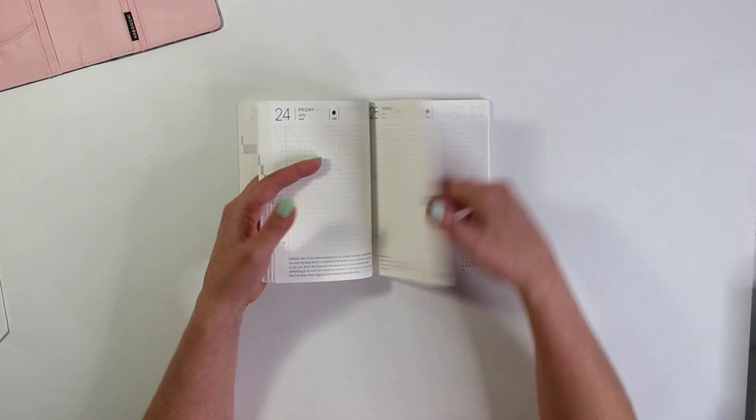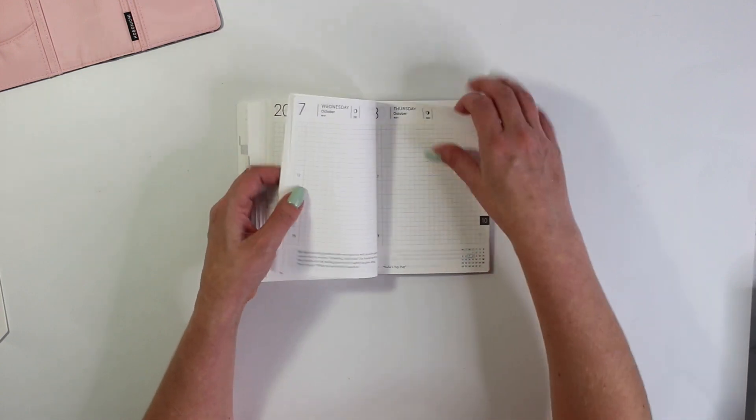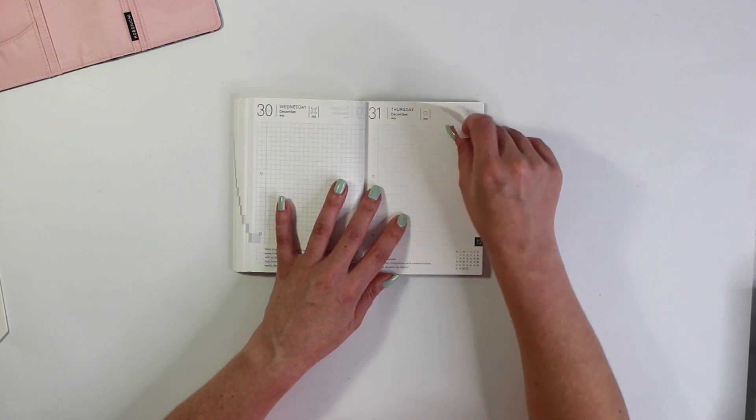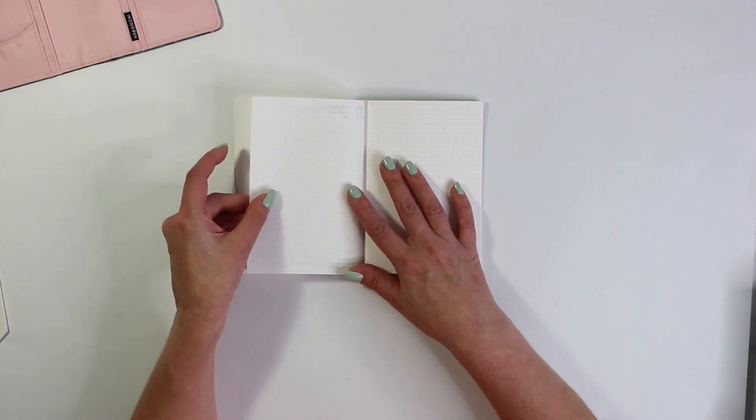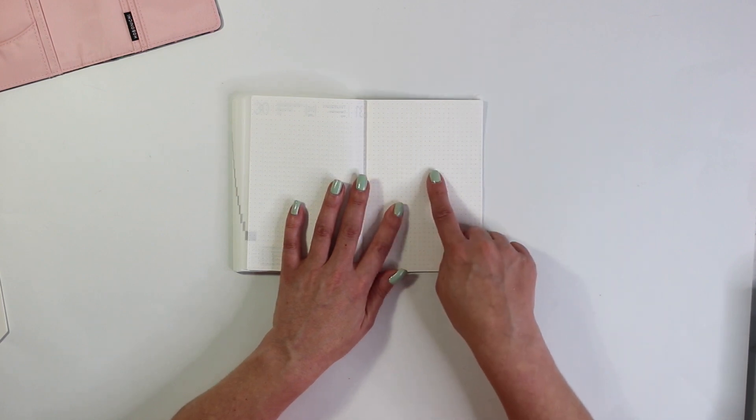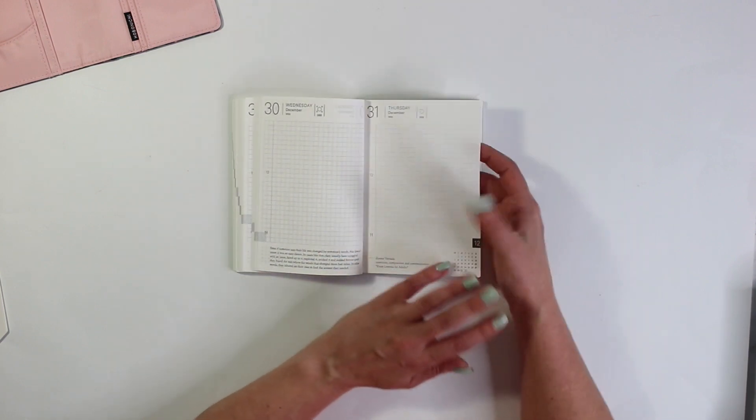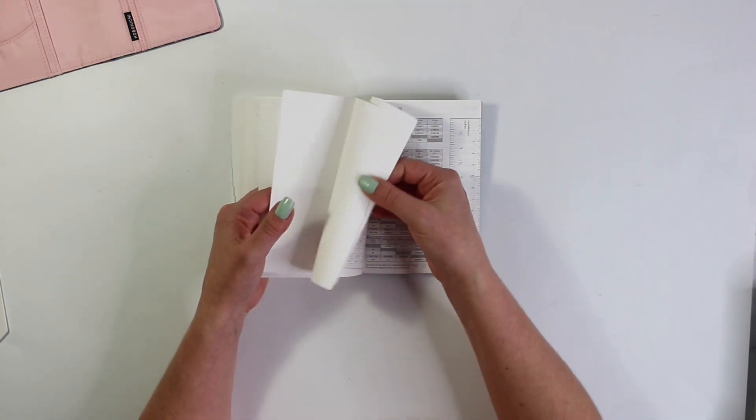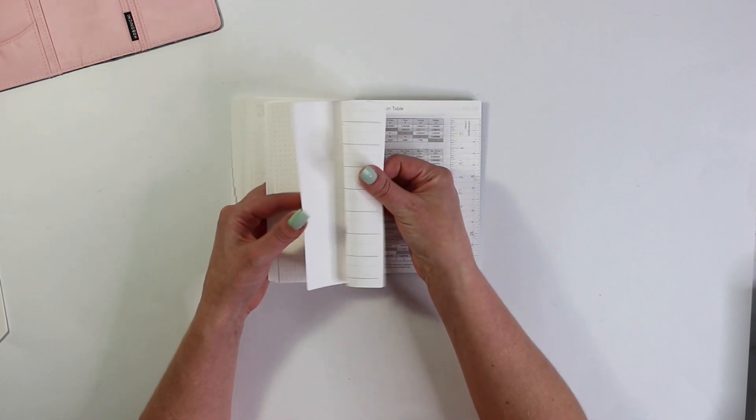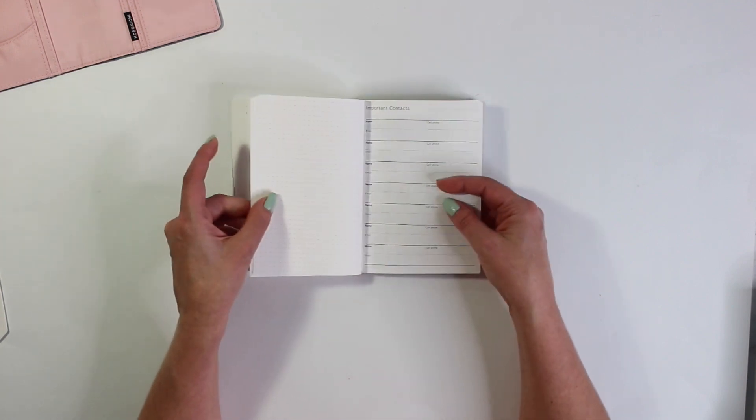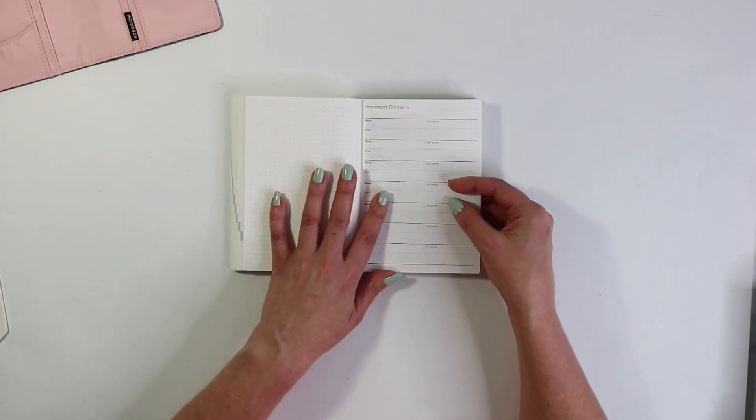Now let's go ahead and flip to the back of the planner and see what other goodies we have in here. So ends with December 31st and then it goes into extra bullet pages. So these are actually red bullets instead of the gray graph that you get throughout the planner. So there are several of these pages so you can use them as extra bullet journaling pages in here. Maybe some collections if you like or just extra list taking.